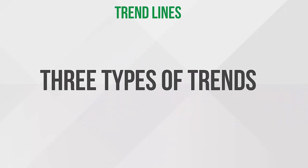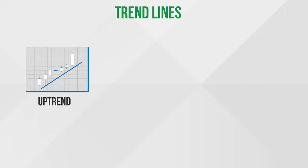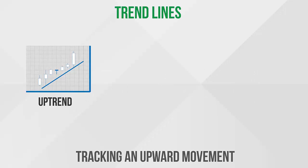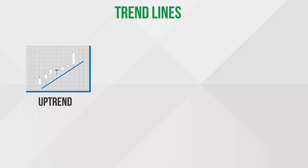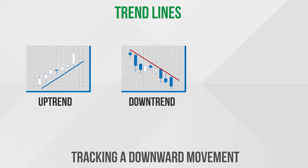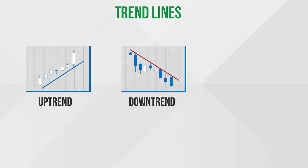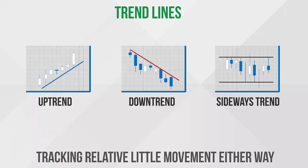There are three kinds of trends that you will need to analyze as a Forex trader: uptrends, tracking an upward movement; downtrends, tracking a downward movement; and sideways trends, tracking relatively little movement either way.